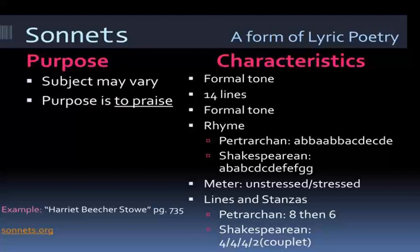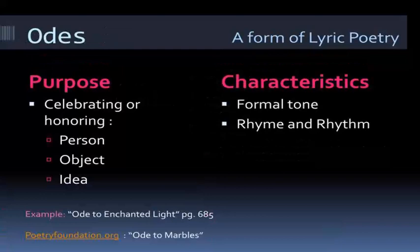Odes, on the other hand, celebrate or honour a person, object, or idea. They usually have a formal tone with specific rhyme and rhythm. Examples include Ode to the West Wind by Shelley and Ode to a Nightingale by Keats. These are examples of lyric poetry.